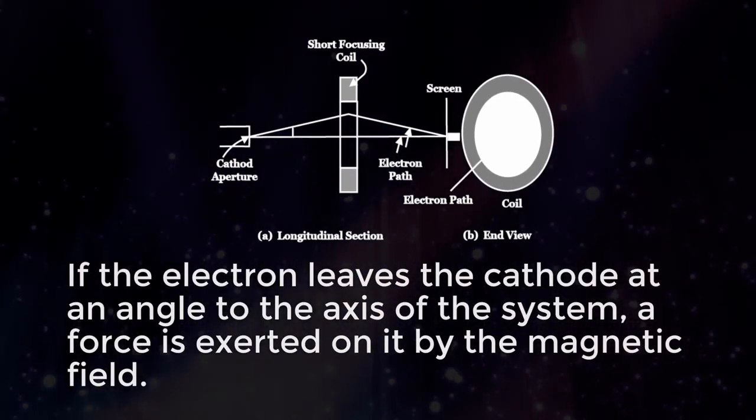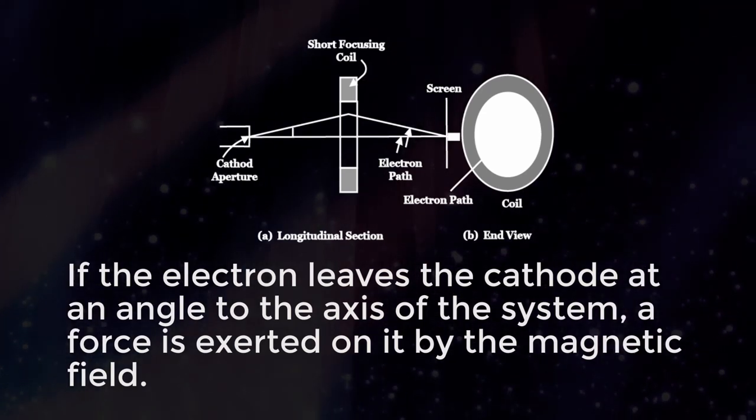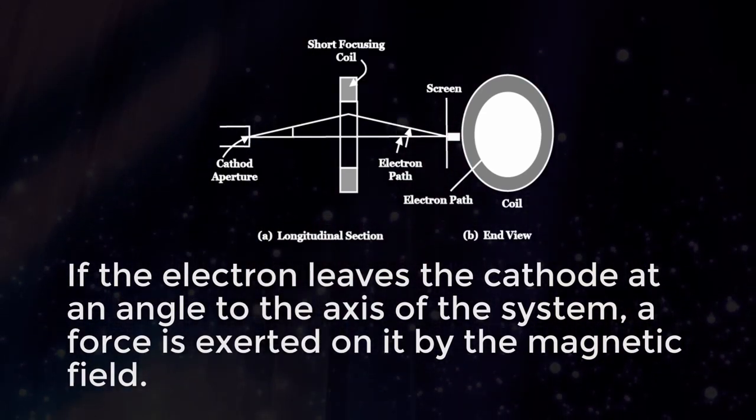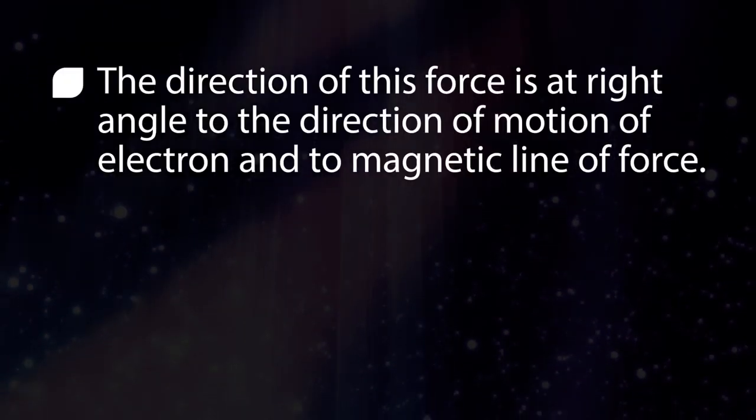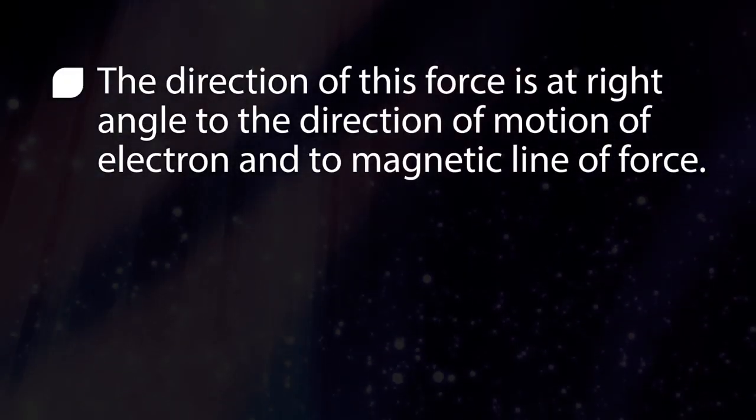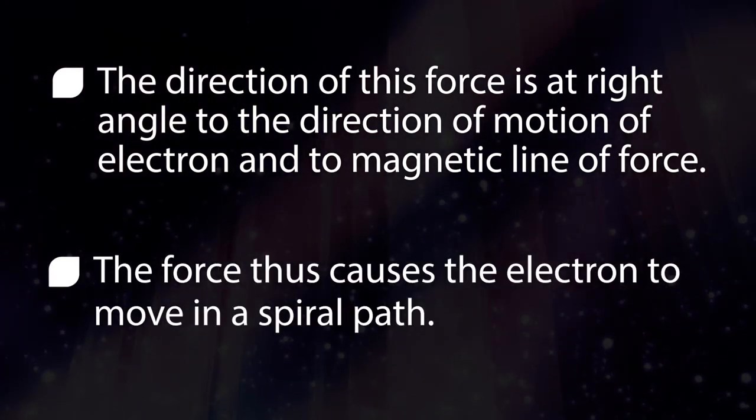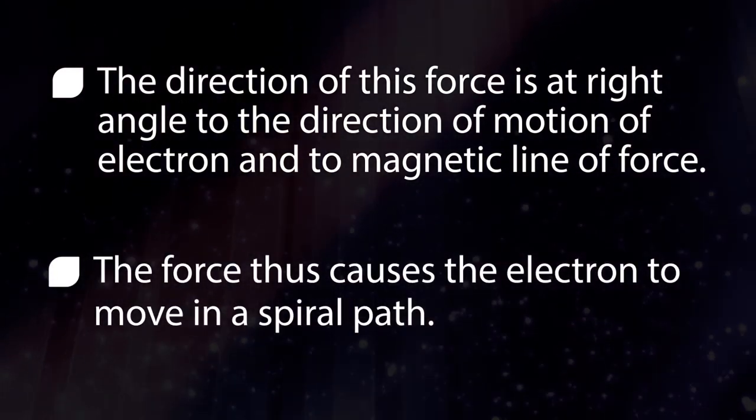If the electron leaves the cathode at an angle to the axis of the system, a force is exerted on it by the magnetic field. The direction of this force is at right angle to the direction of motion of electron and to magnetic line of force. The force thus causes the electron to move in a spiral path.